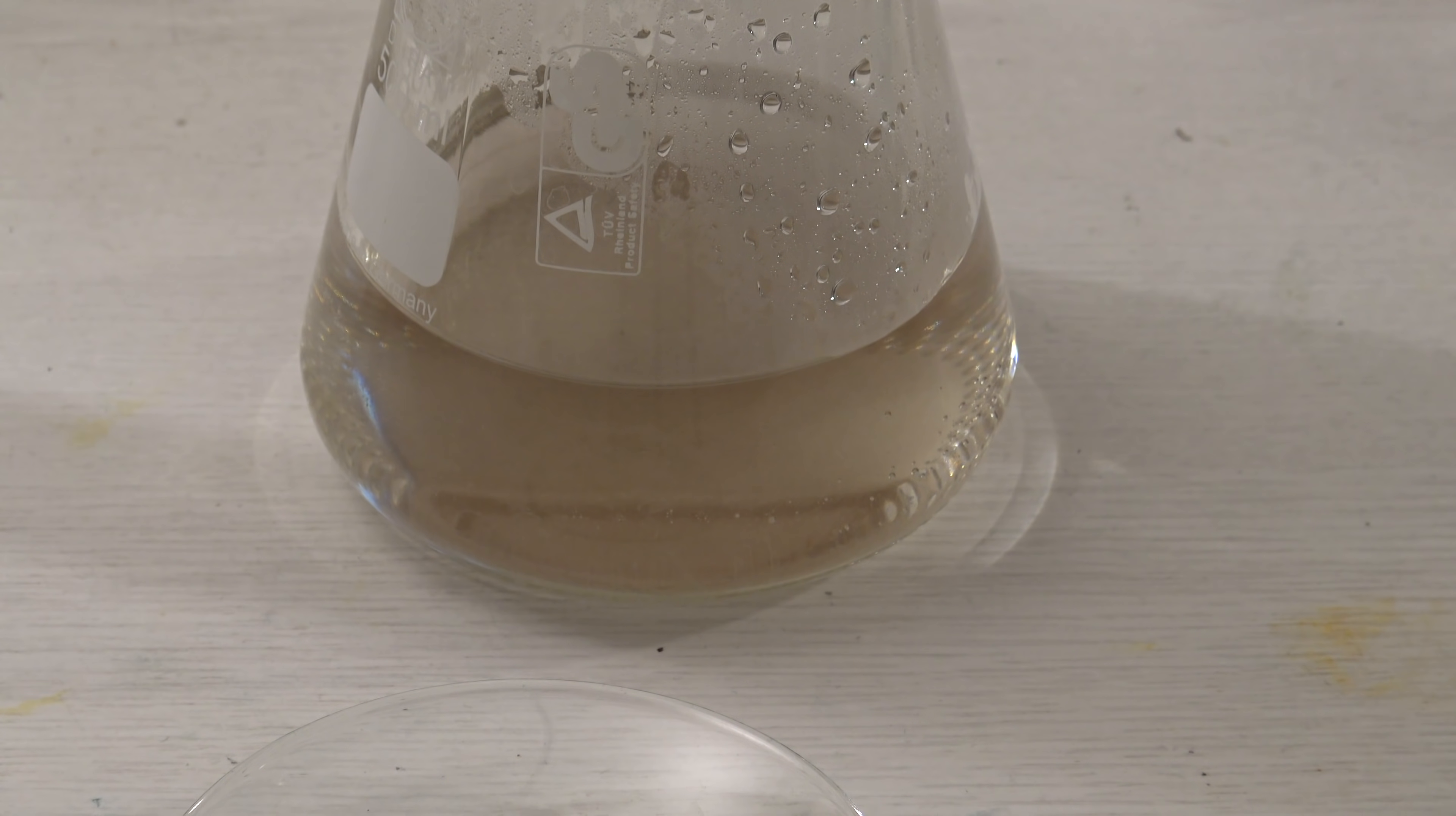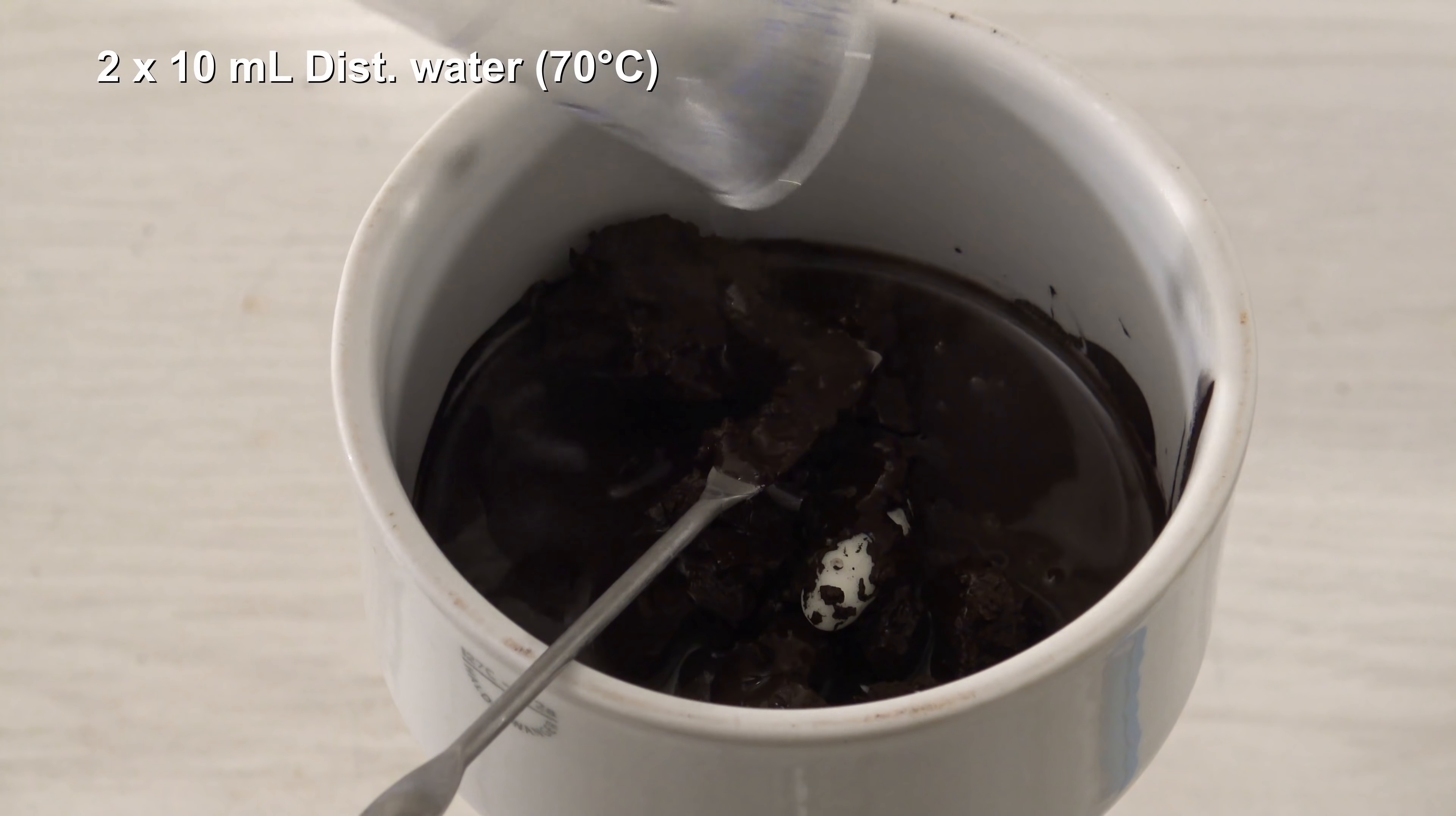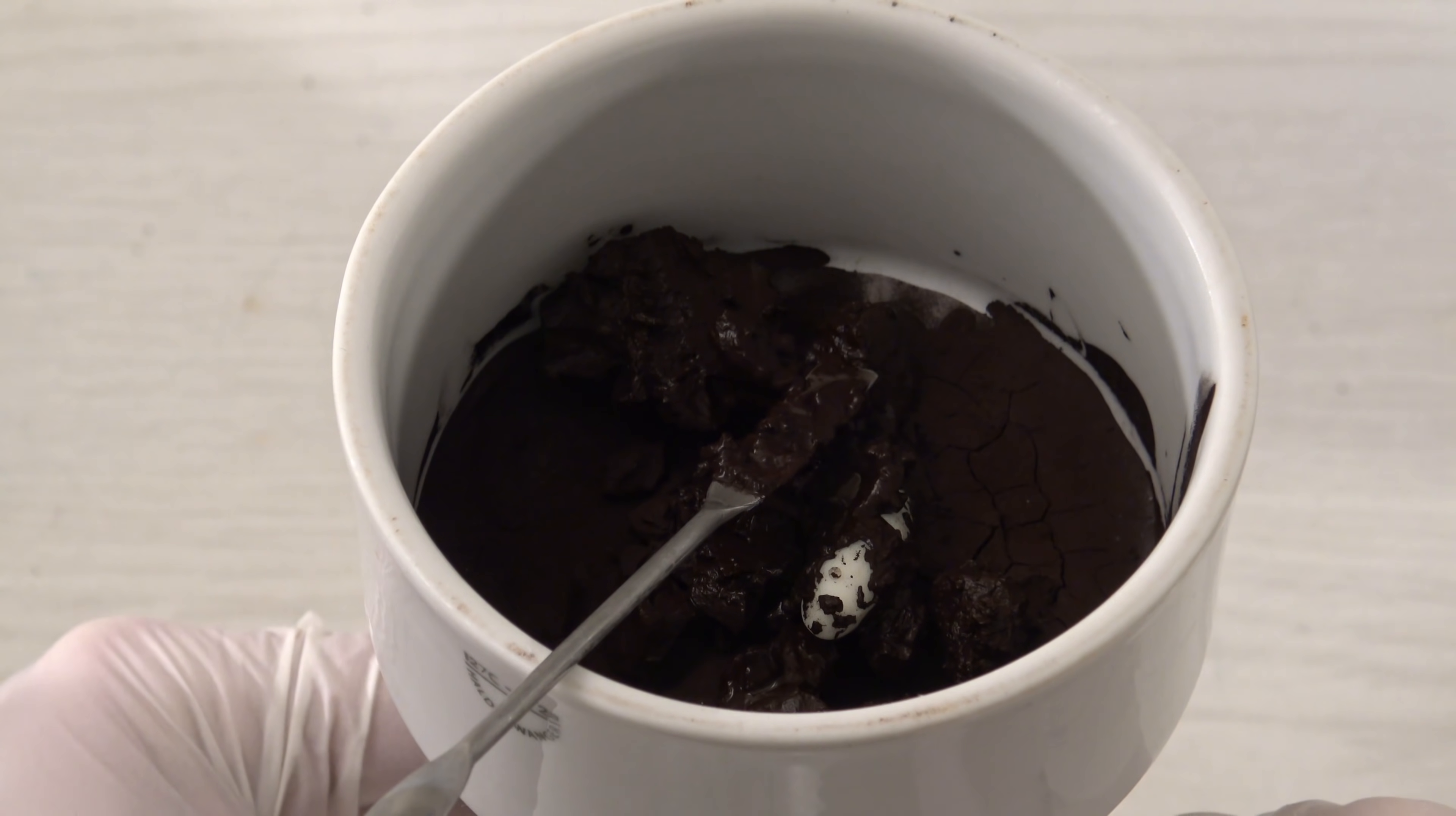Usually, some manganese dioxide passes through the filter, which is why the filtrate had a slightly brownish color. Next, it was washed two times with 10 milliliters of distilled water, which were taken from the 70 milliliters. This should wash out residues of the benzoic acid salt.